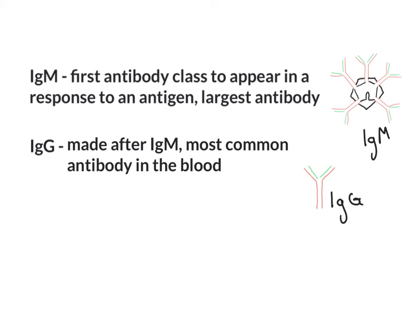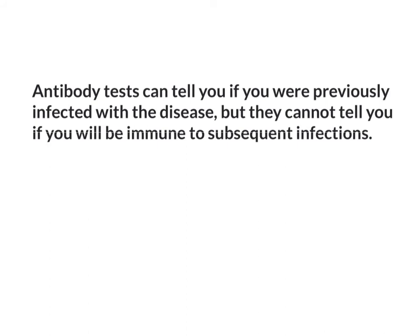Antibody tests can tell if you were previously infected with the disease, but they cannot tell you if you will be immune to subsequent infections. This depends greatly on the virus and whether or not it mutates and can infect you again. We also don't know how long antibody immunity will stay in the body — some antigens are capable of making antibodies stay around much longer, while sometimes they really don't last too long. So all said, antibody testing tests for the antibody that the body makes against the virus, and a positive result would indicate that you had previously been infected.